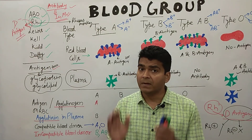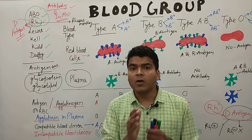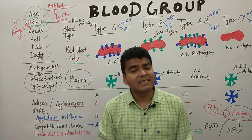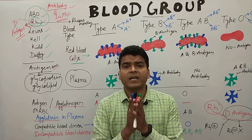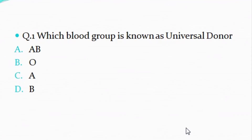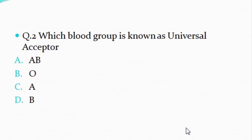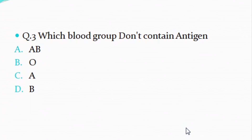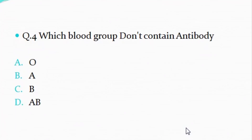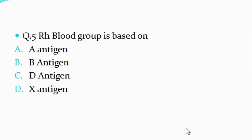Now here are five review questions: Q1 — Which blood group is the universal donor? (A) A, (B) B, (C) O, (D) B. Q2 — Which blood group is the universal acceptor? A, B, O, or AB? Q3 — Which blood group does not contain antigen? A, O, AB, or B? Q4 — Which blood group does not contain antibody? O, A, B, or AB? Q5 — The Rh blood group is based on which antigen? A antigen, B antigen, D antigen, or X antigen?